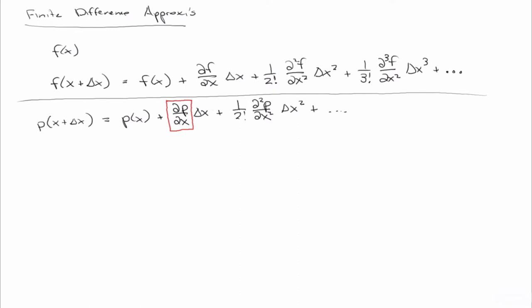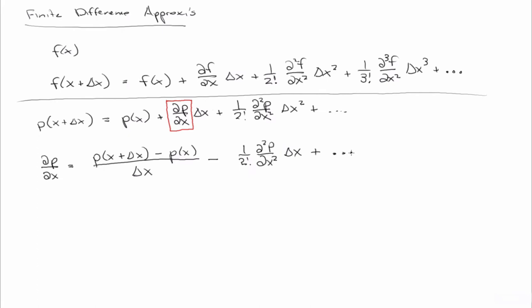We rearrange this equation solving for that first derivative term. Notice that this term has been divided by delta x, so what was delta x squared up here is now just delta x.